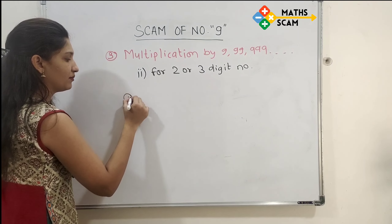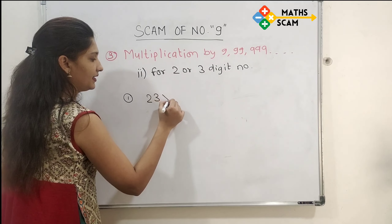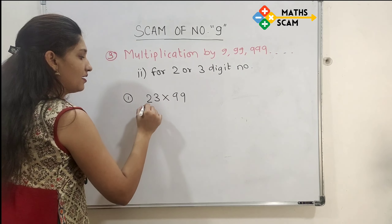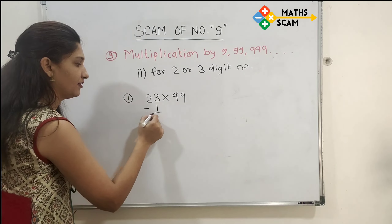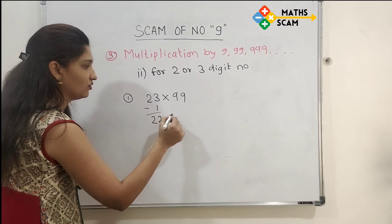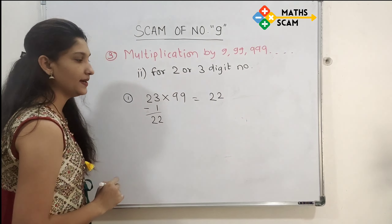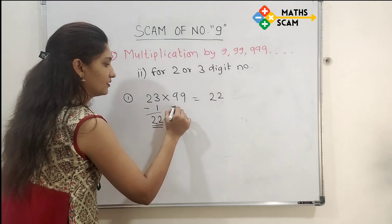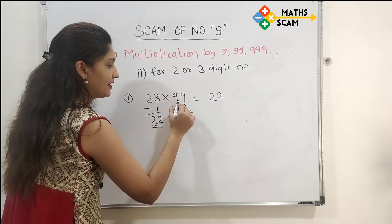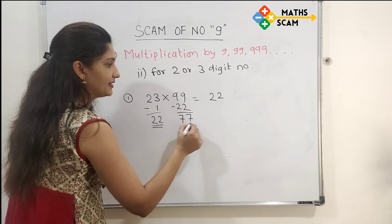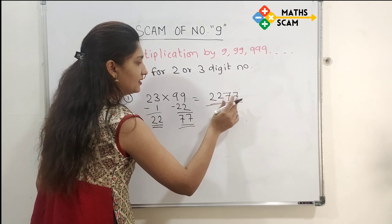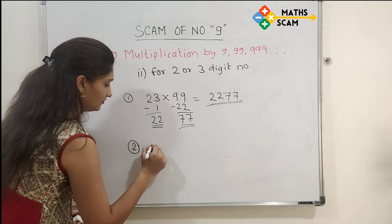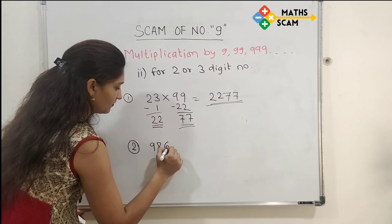For 2 or 3-digit numbers, the method is slightly different. First example: 23 times 99. Subtract 1 from 23: 23 minus 1 is 22. Write 22 on the left side. Then subtract 22 from 99: 9 minus 2 is 7, 9 minus 2 is 7. Write 77 on the right side. The answer is 2277.